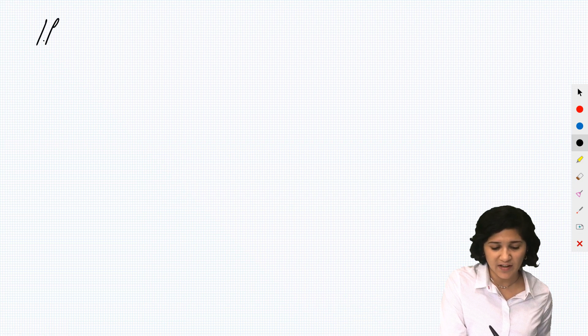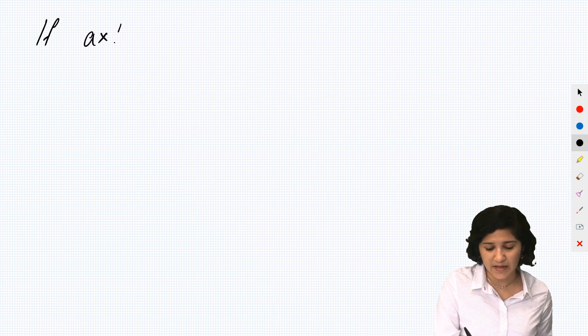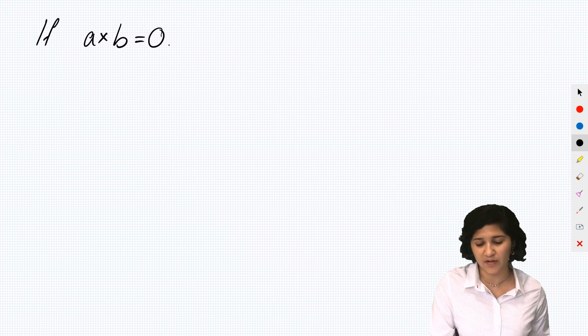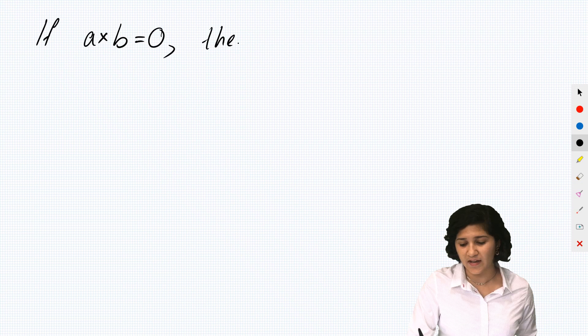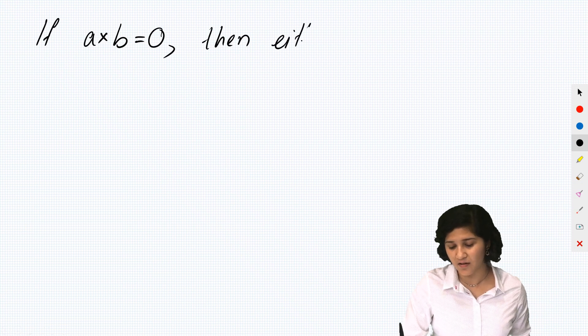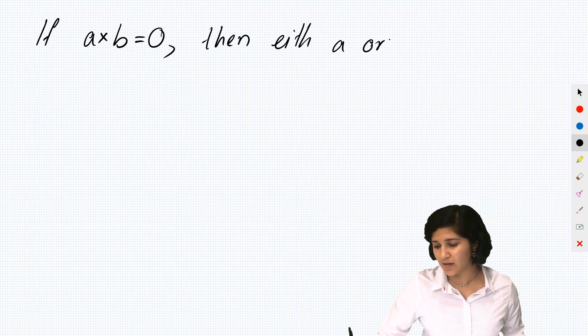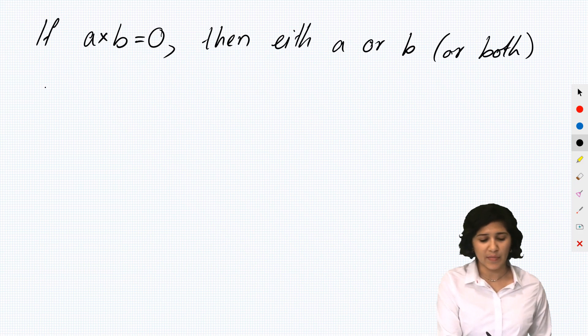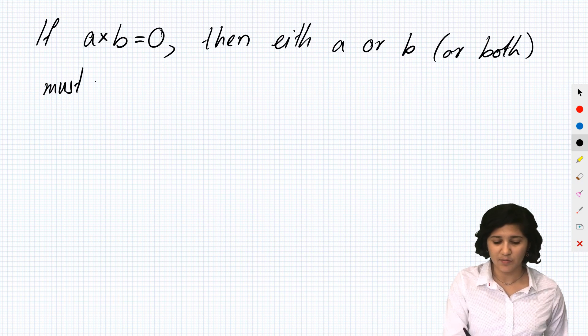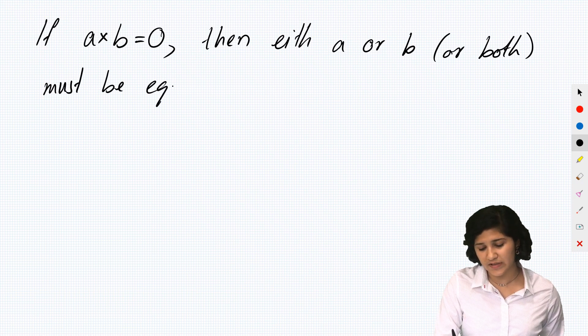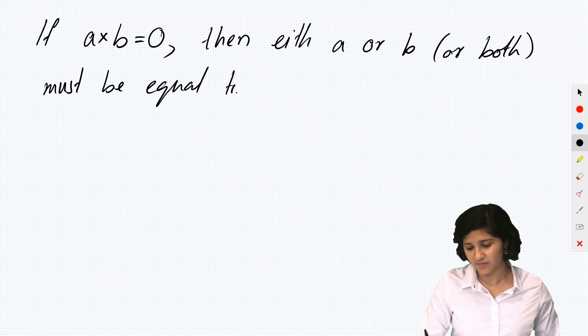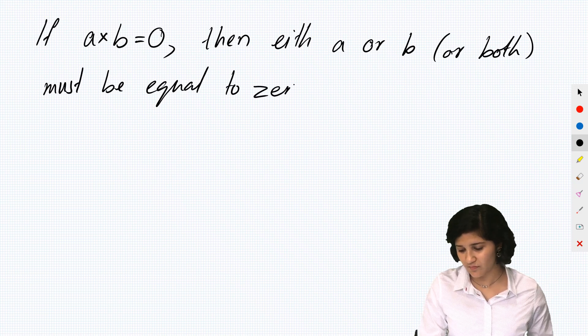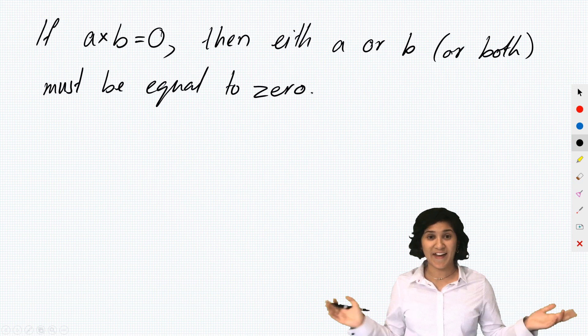It's that if a times b is equal to zero, then either a or b or both must be equal to zero, and that's it.